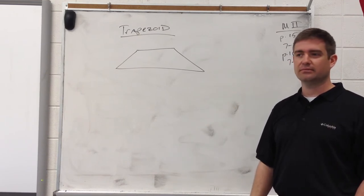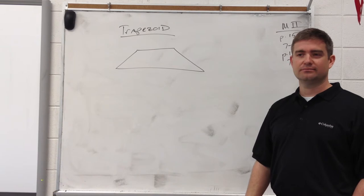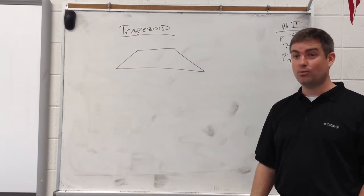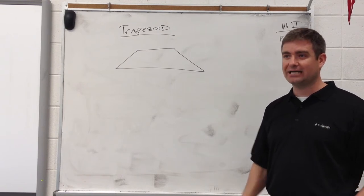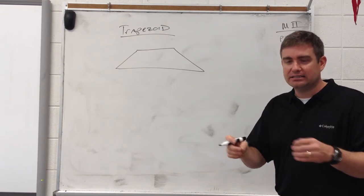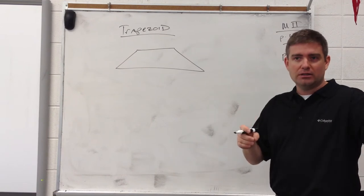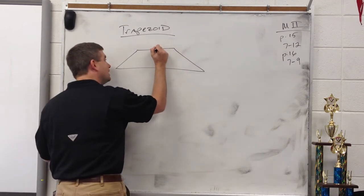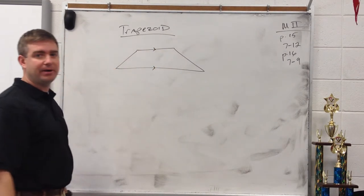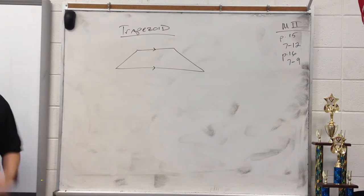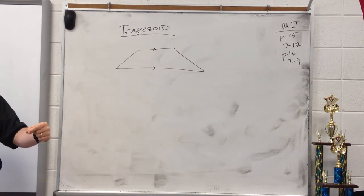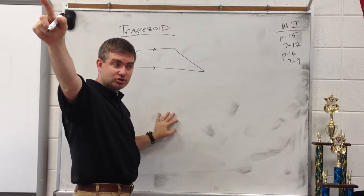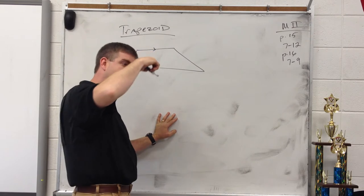The most important word in that definition is 'exactly.' Exactly one pair of parallel sides — does it mean one or more? No. Does it mean less than one? No. It means exactly one. You can only have one pair of parallel sides and it be a trapezoid. Because if both pairs are parallel, then you have a parallelogram, not a trapezoid.